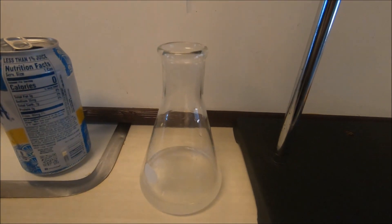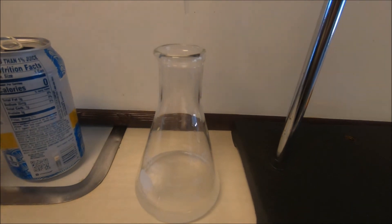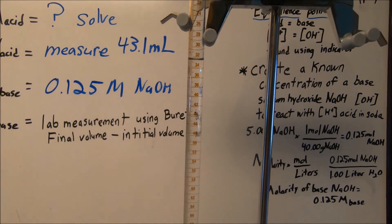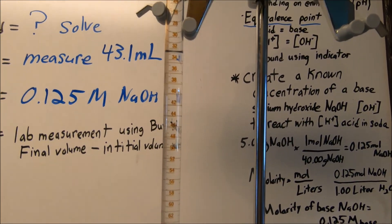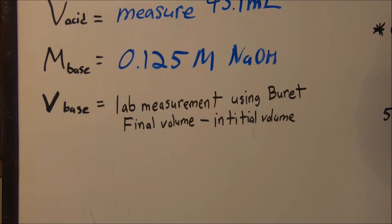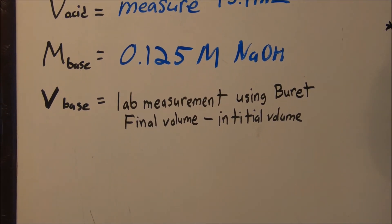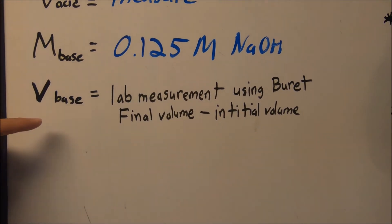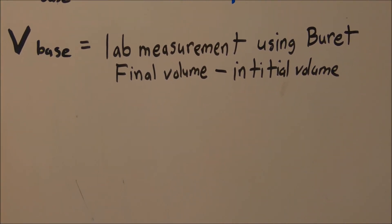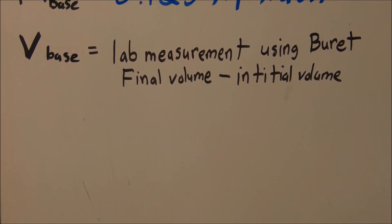We're going to add in the color indicator and start collecting some data, seeing how much volume we're actually going to collect. To calculate the volume of the base, this will be our lab measurement using the burette so we can get as accurate of a measurement as we can. That final volume minus the initial volume is going to be the total volume of the base that was used.